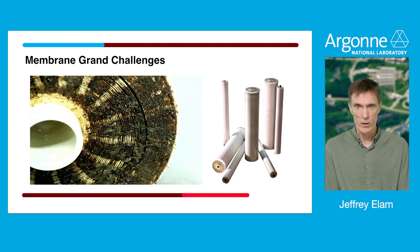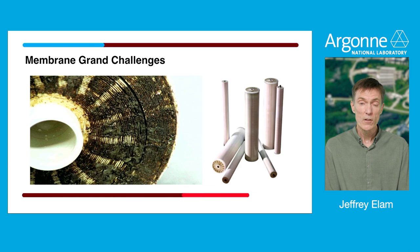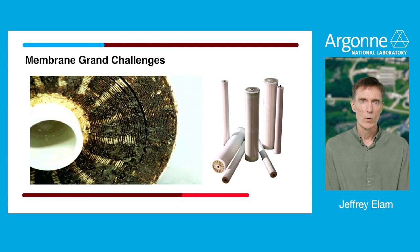These water filtration membranes are made from polymers, and one of the disadvantages is that organic pollutants and other organic materials in the water can stick to these polymer membranes and cause them to clog. There are a variety of ways to try to mitigate this fouling problem, but many of them have the disadvantage that they can also change the porosity of the membrane, which is a necessary component for its functioning.